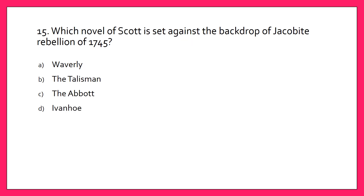Moving on to the final question of this video: which novel of Scott is set against the backdrop of the Jacobite Rebellion of 1745? A. Waverley, B. The Talisman, C. The Abbot, or D. Ivanhoe. The answer is A. Waverley. That is it for today.